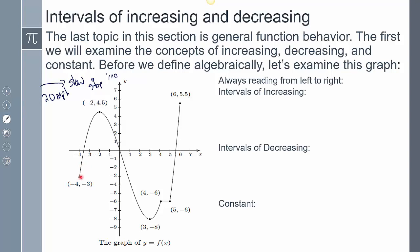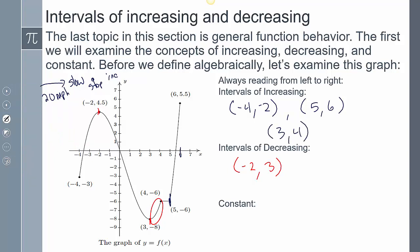Looking at the x-values: the function is increasing from negative 4 to negative 2, and also from 5 to 6. It's decreasing from negative 2 all the way to 3. I also notice there's an interval from 3 to 4 that's also increasing. The only piece that's constant is from 4 to 5, so the interval from 4 to 5 remains constant.